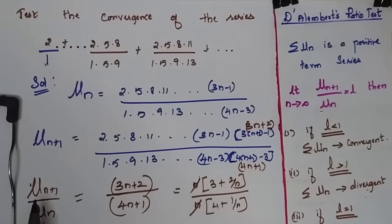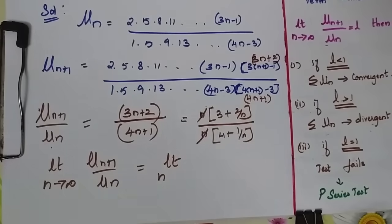So now I am going to find un plus 1 by un. I will cancel this. Now it is limit n tends to infinity of un plus 1 by un.